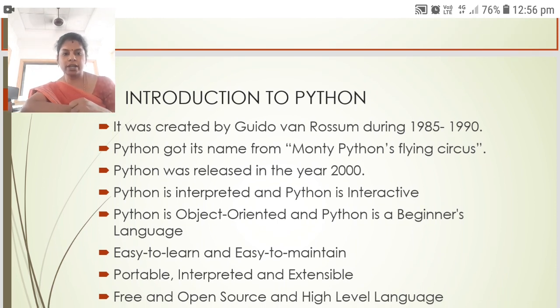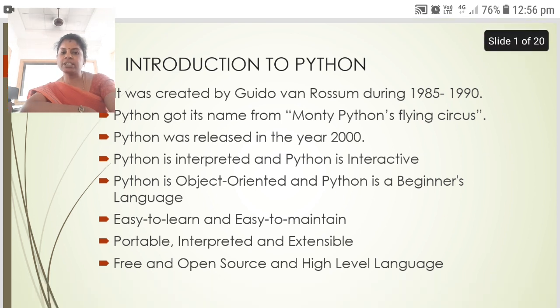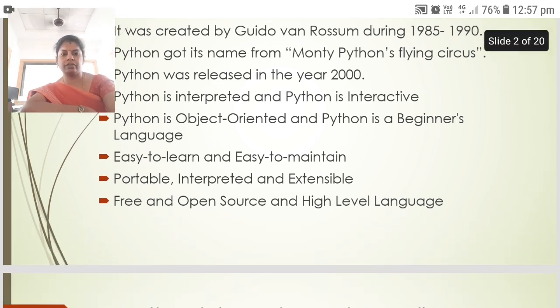It was created by Guido Van Rossum during 1985 to 1990. Python got its name by Monty Python's Flying Circus. Python was released in the year 2000. Python is interpreter and Python is interactive. Python is object-oriented and Python is a beginner's language. It is easy to learn and easy to maintain. It is portable, interpreted and extensible. It is free and open source and high-level language.